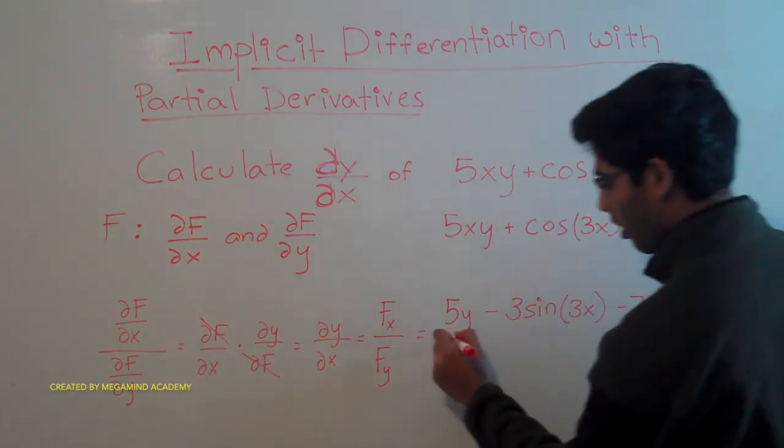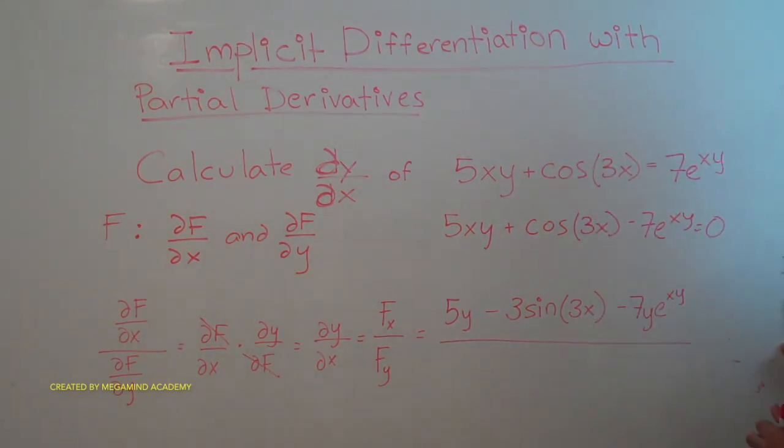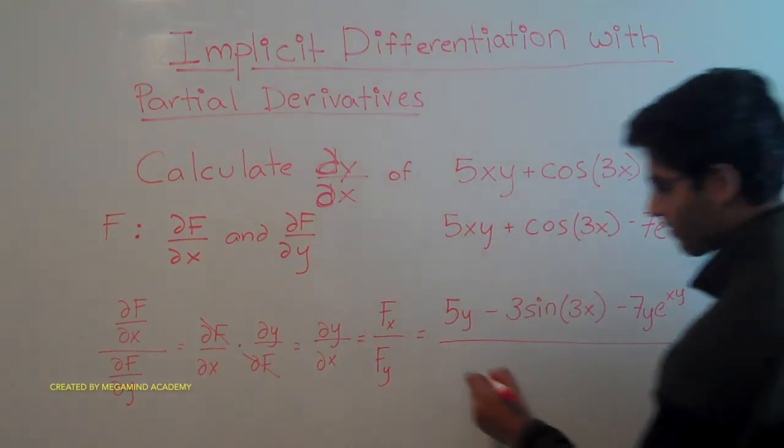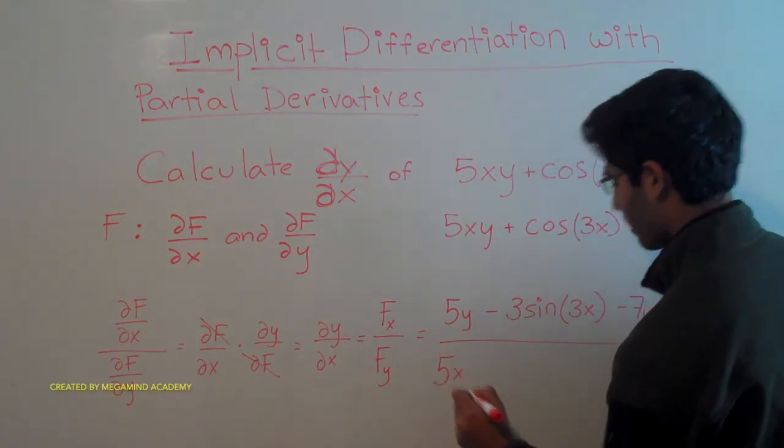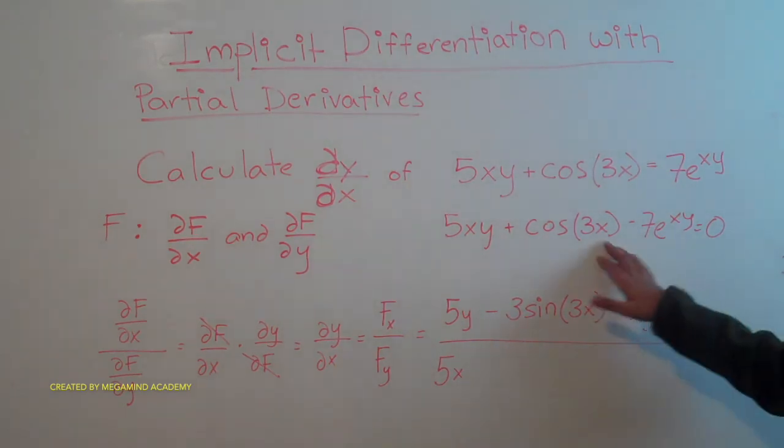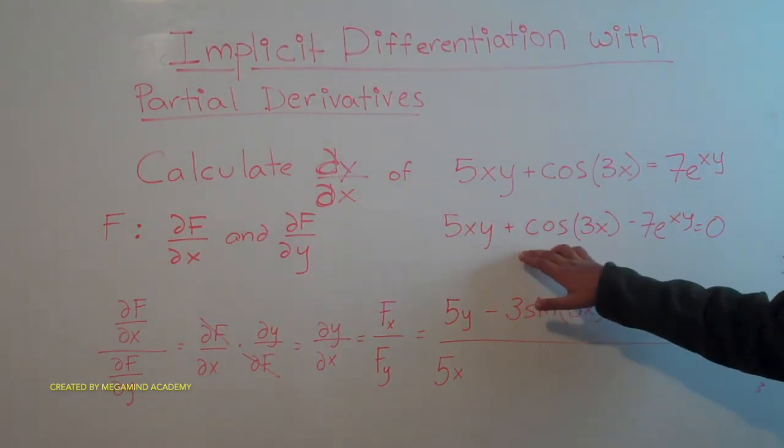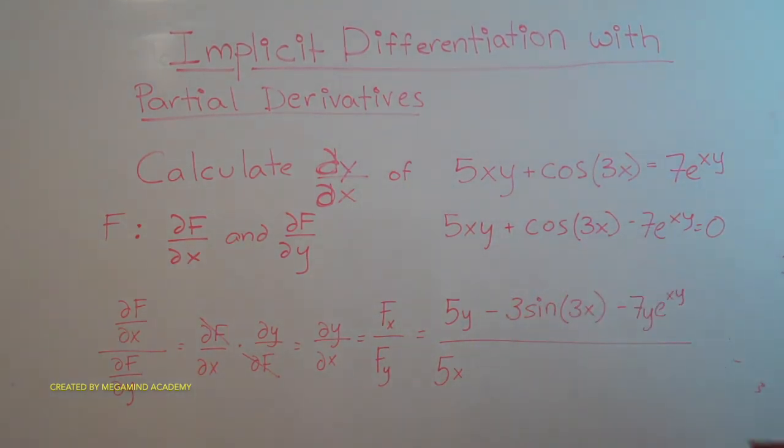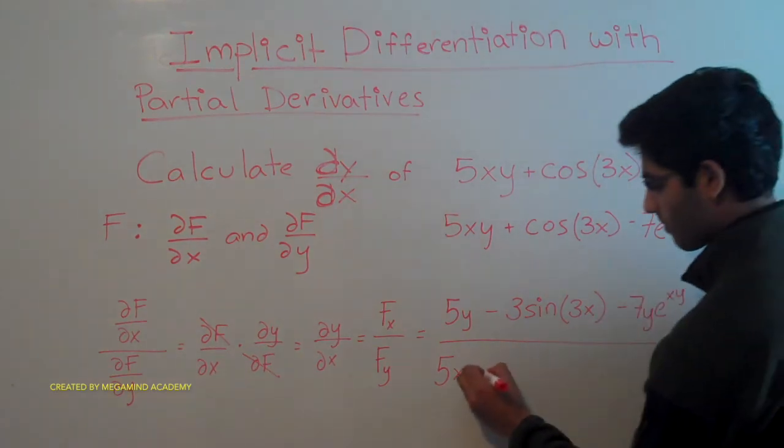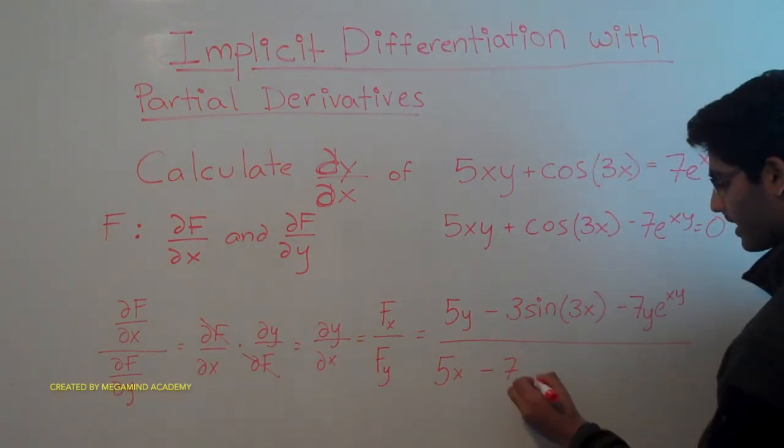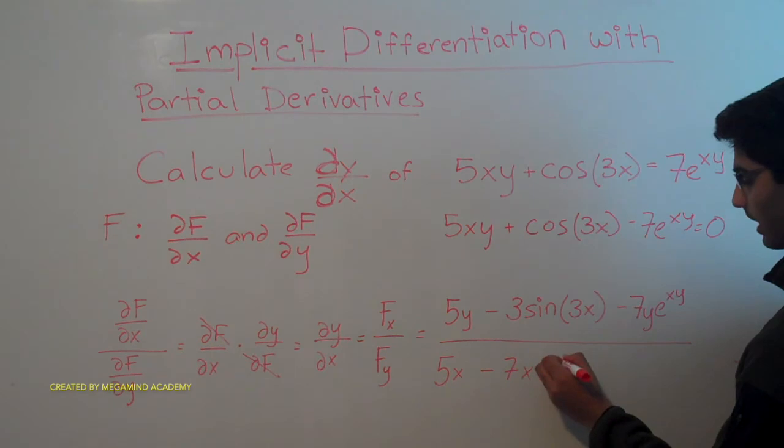Now we have to put this over the derivative of f with respect to y, which should be 5x. Then here, there are no terms comprised of y in this term, which means it's plus 0, minus 7x times e to the xy power.